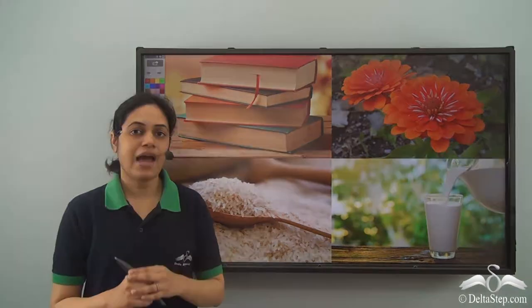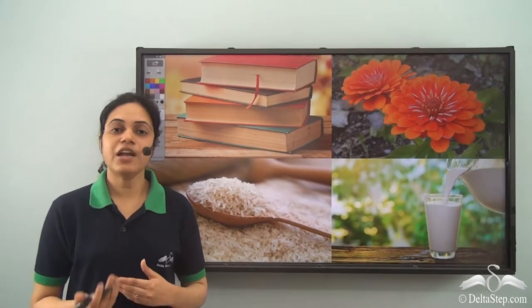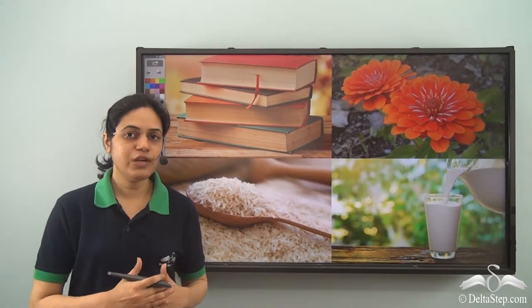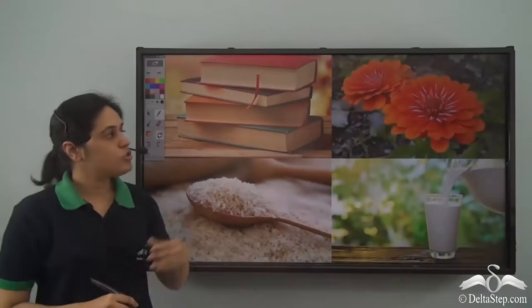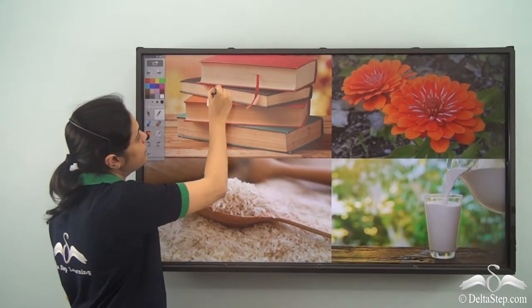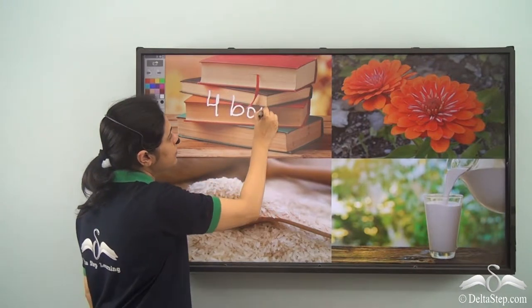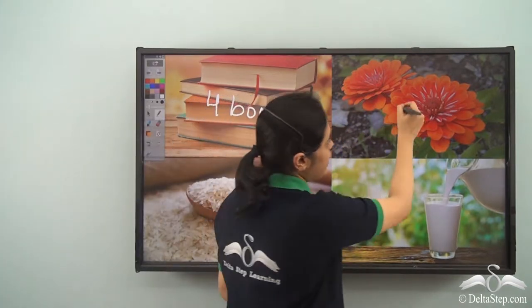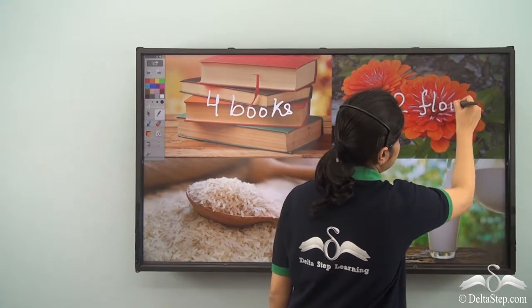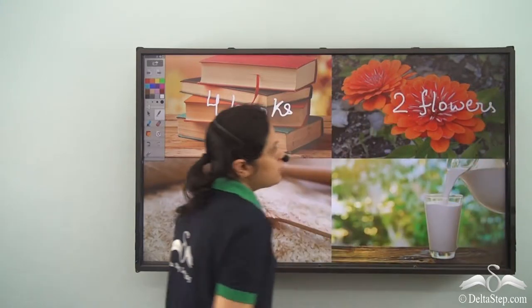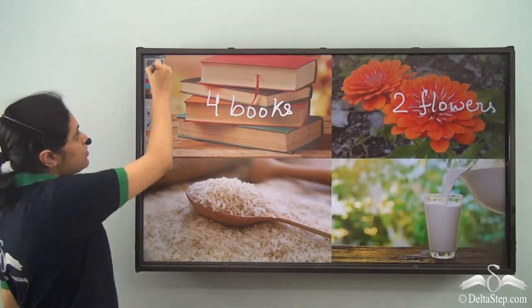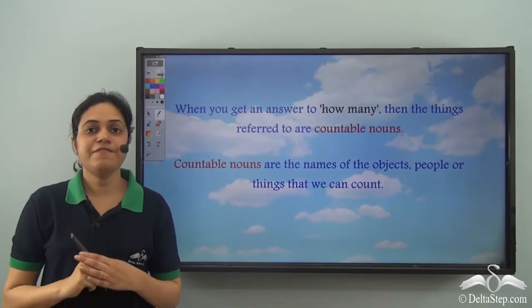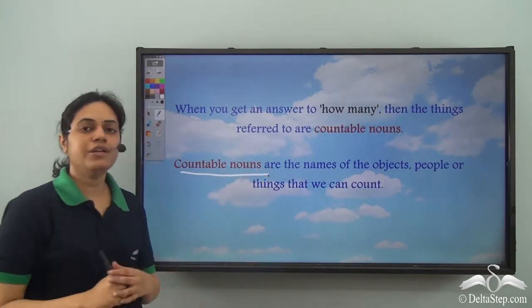We know that nouns are naming words, and depending on whether a noun can be counted or not, it is classified as either a countable or an uncountable noun. There are four books here, so I can count the number of books, and we have two flowers here, so I can count the number of flowers. So, books and flowers are called countable nouns.